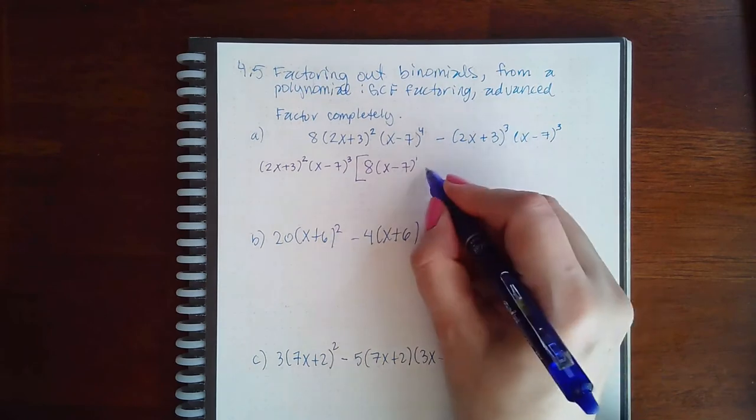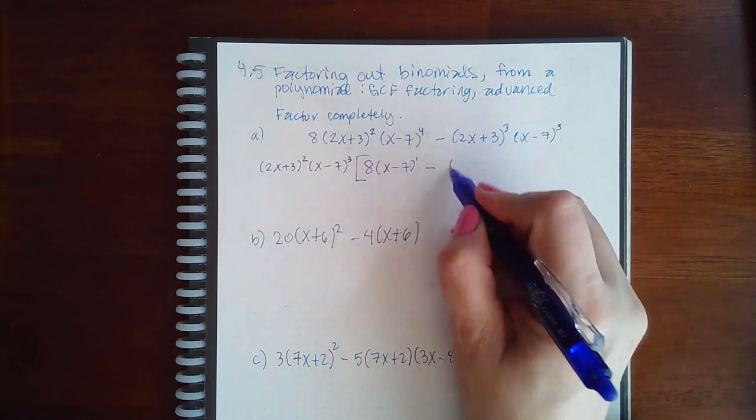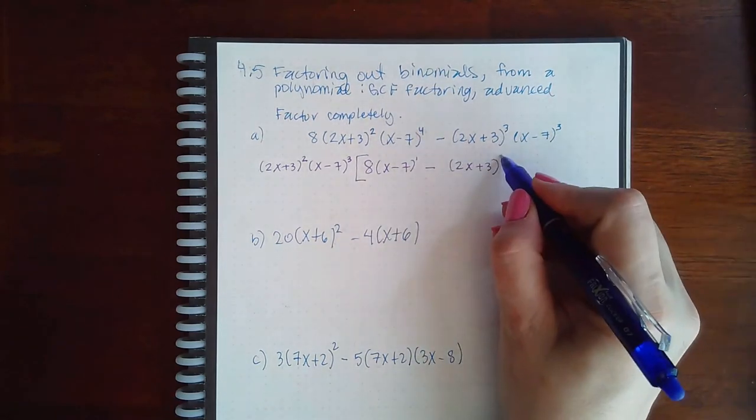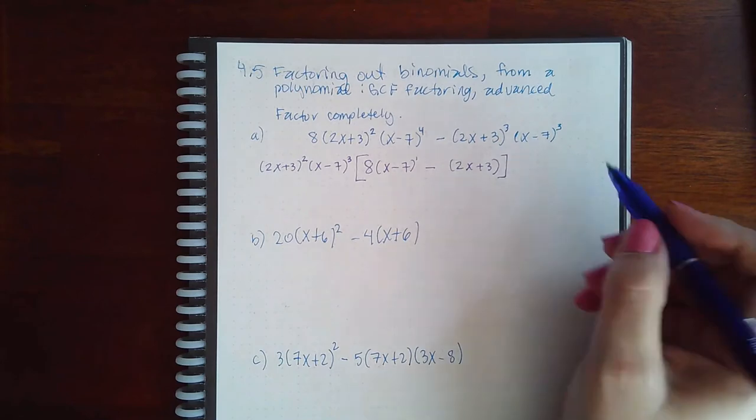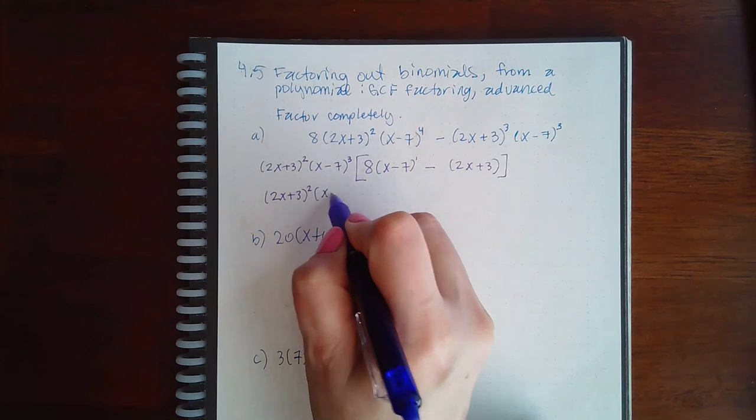So what am I left with? I'm left with the 8. These are gone. Three of these are gone, but I still have one left. And then the minus sign. I took out two of those, so I still have one left. And then I took out that, so that's gone. So I just have this expression.